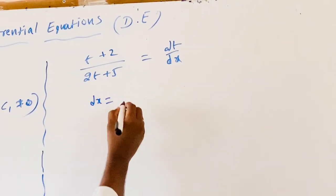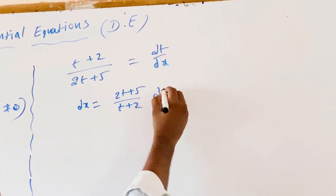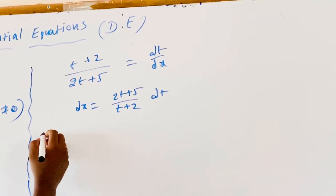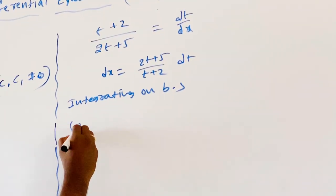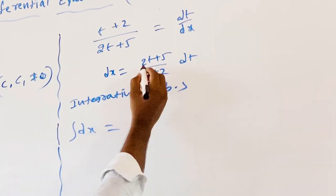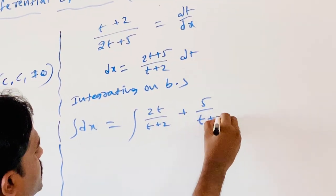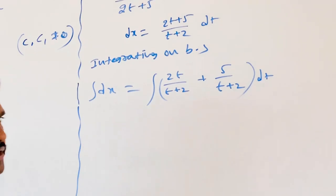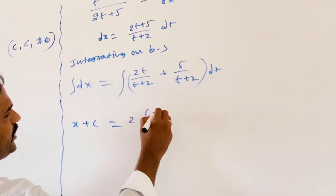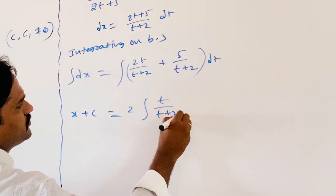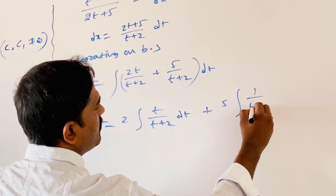By the variable separable method, we get dx = (2t + 5) / (t + 2) dt. Integrating on both sides: the integral of dx equals the integral of (2t + 5) / (t + 2) dt. Splitting the fraction partially: this becomes 2∫(t / (t + 2)) dt + 5∫(1 / (t + 2)) dt. The left side integrates to x + C.